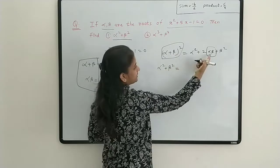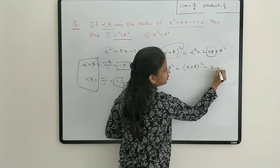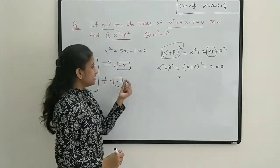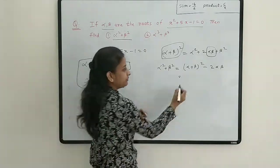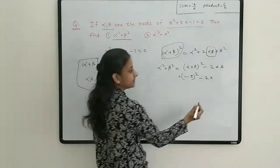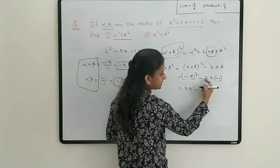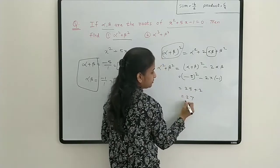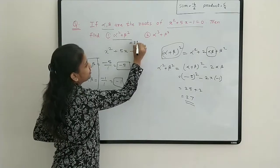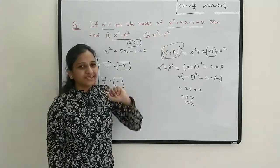Alpha² + beta² equals (alpha + beta)² - 2·alpha·beta. Substituting: (-5)² - 2(-1) = 25 + 2 = 27. So alpha² + beta² = 27.